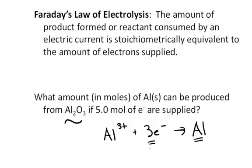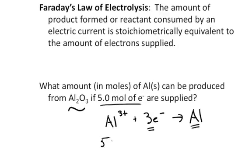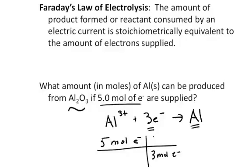If the question was given 5 moles of electrons, how many moles of aluminum can we produce in an electrolytic cell? Then I would do a simple stoichiometric problem where I start with what's given, 5 moles of electrons, multiply it by the stoichiometric equivalence which is 3 moles of electrons for every 1 mole of aluminum produced from the balanced half reaction.